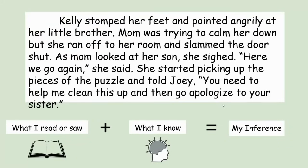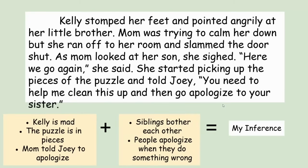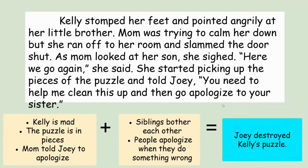Sometimes you make inferences when you're reading too. Let's try it with this passage: Kelly stomped her feet and pointed angrily at her little brother. Mom was trying to calm her down, but she ran off to her room and slammed the door shut. As mom looked at her son, she sighed and said 'here we go again.' She started picking up the pieces of the puzzle and told Joey he needed to help clean it up and then go apologize to his sister. What I read is that Kelly is mad, the puzzle is in pieces, and mom told Joey to apologize. What I know is that siblings bother each other a lot and people apologize when they've done something wrong. So my inference is that Joey destroyed Kelly's puzzle.